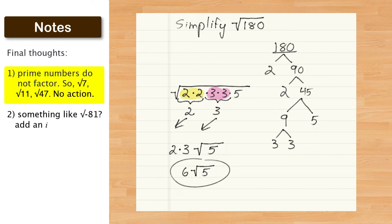Two final thoughts. If any number inside the radical happens to be a prime, like seven or eleven or forty-seven, they just can't be factored and you say, that's great, and just leave it be. If it's prime, there's nothing to simplify.